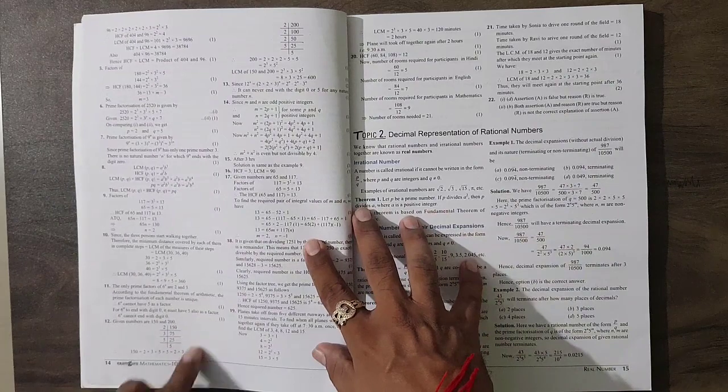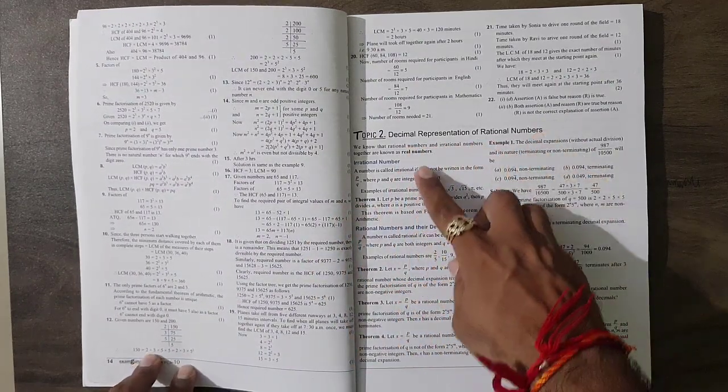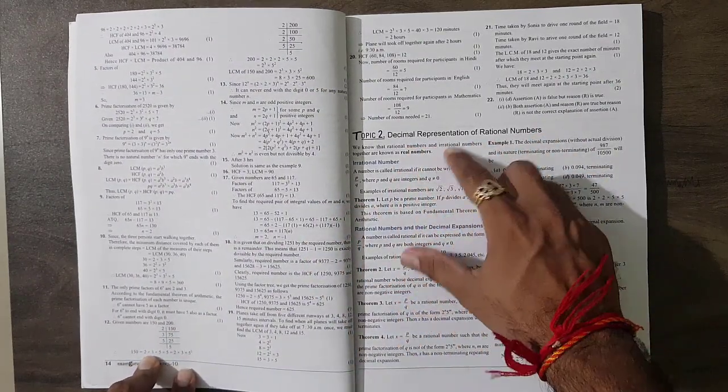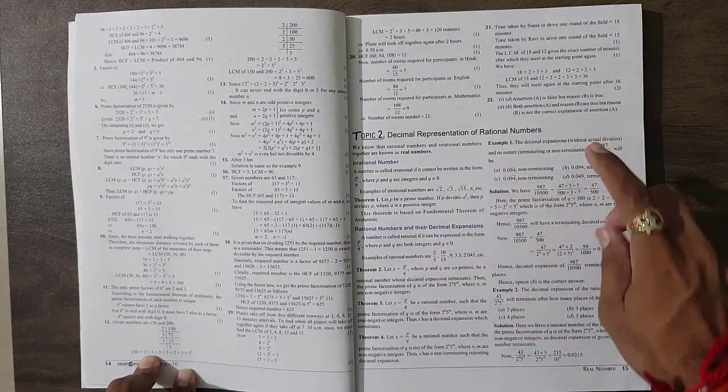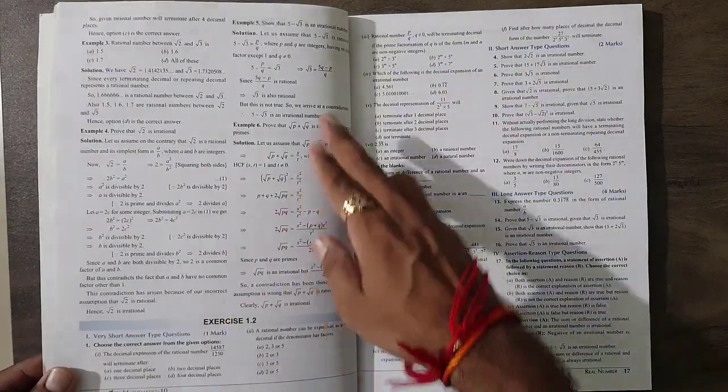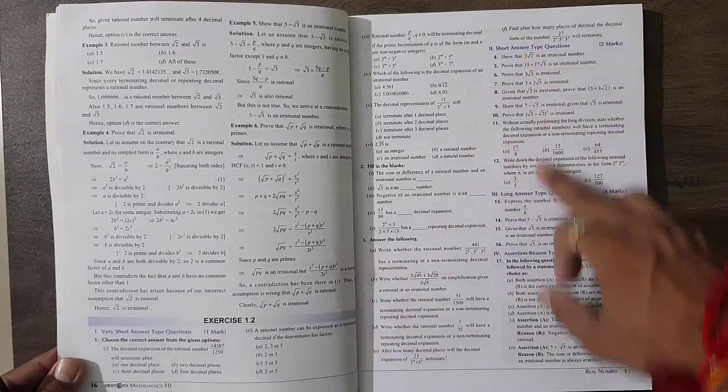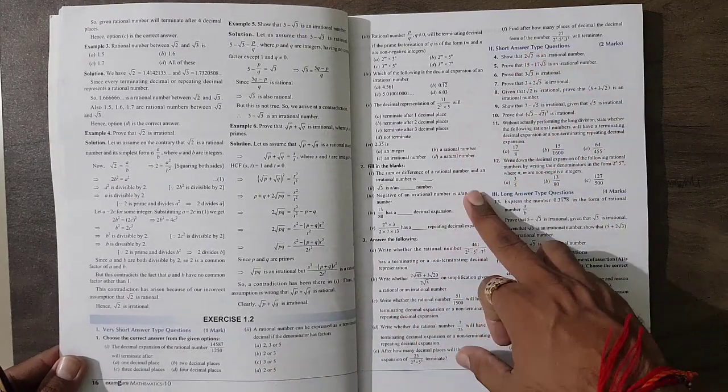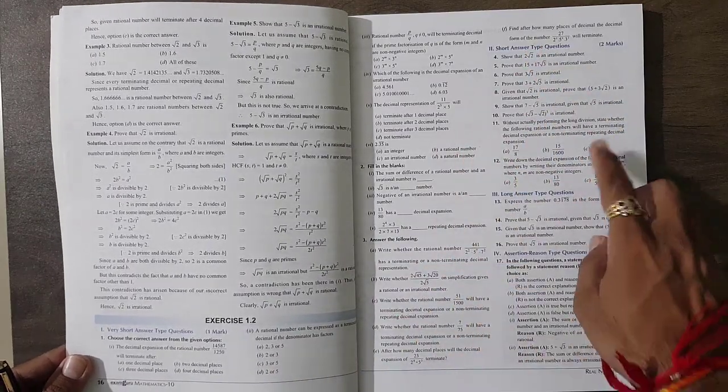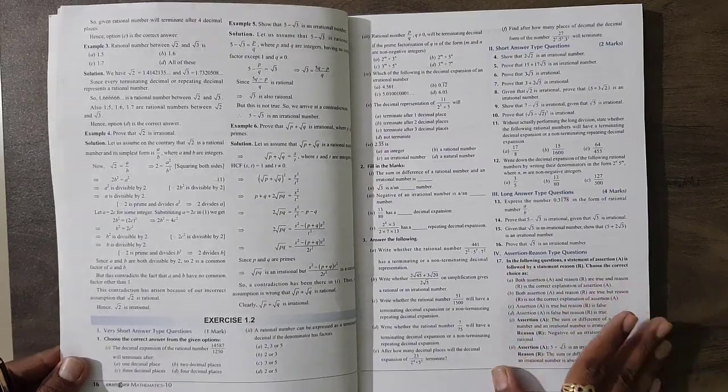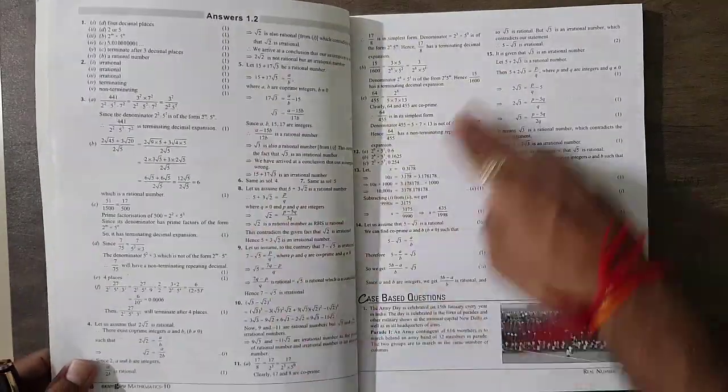Decimal representation, irrational number, rational - some topics and theorems, then again six examples and second exercise. Again MCQs, fill in the blanks, answer the following short and long, assertion-reason type questions and the solutions.